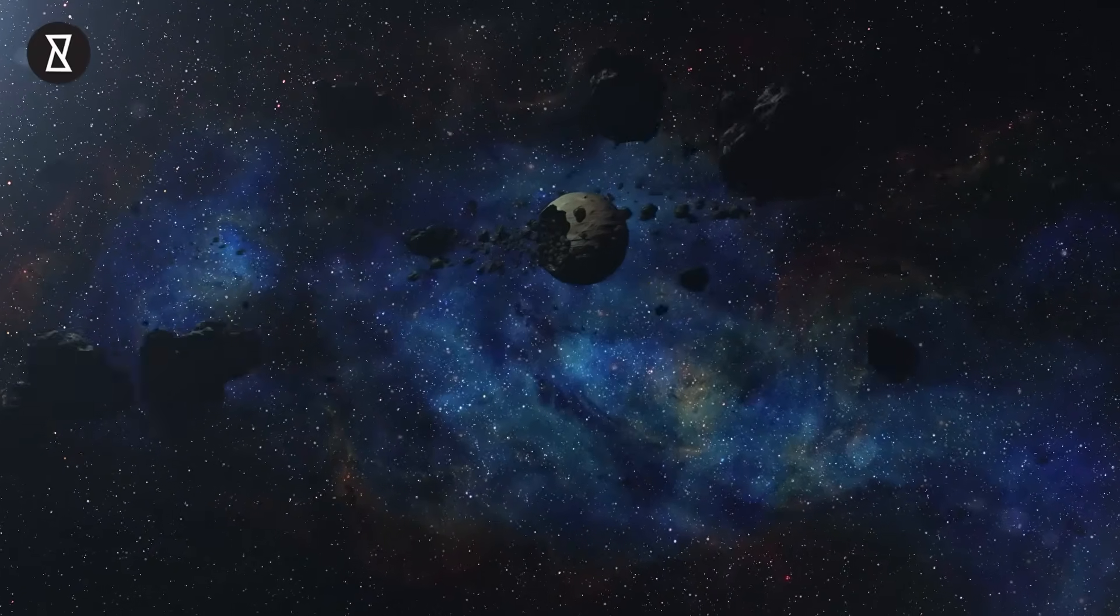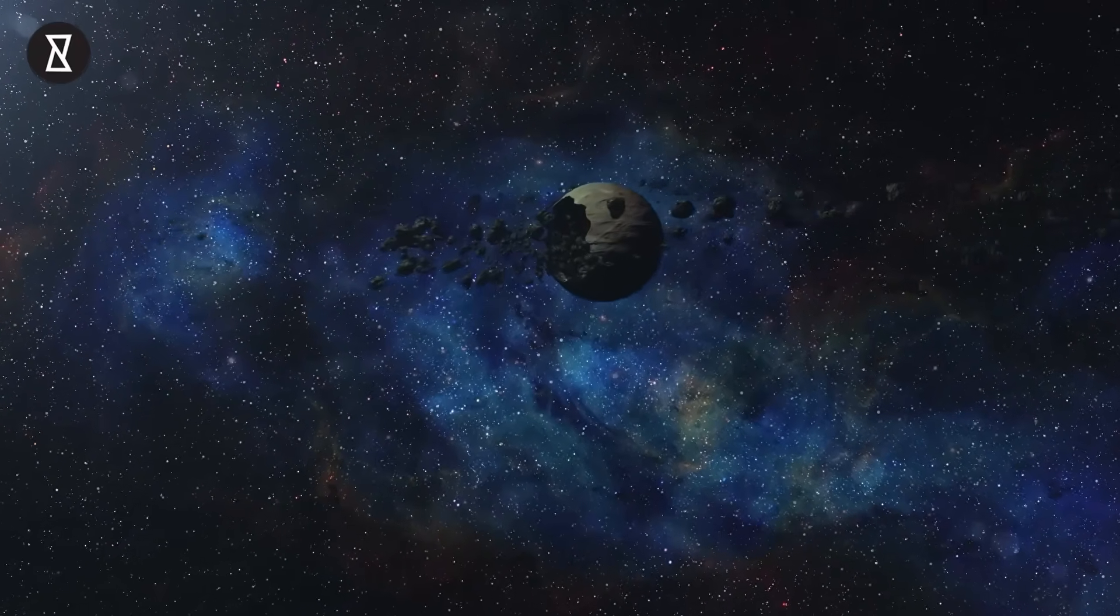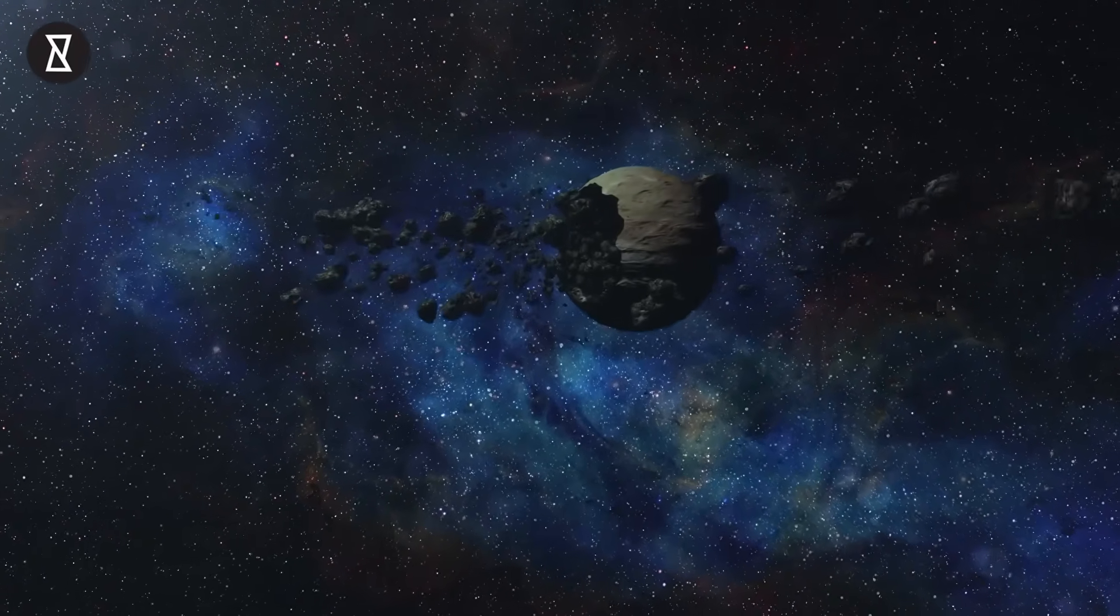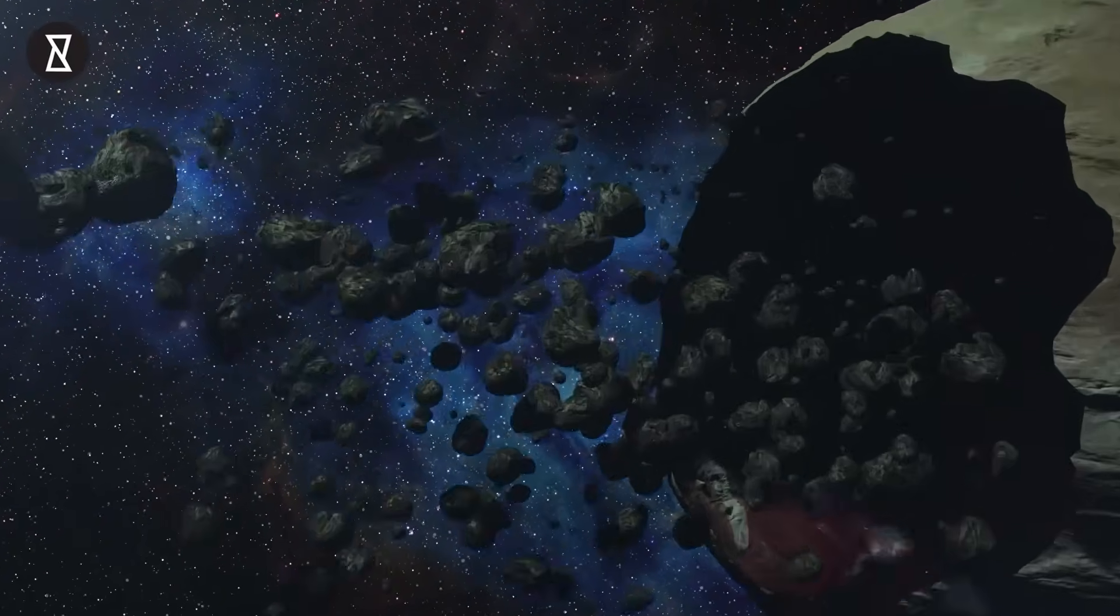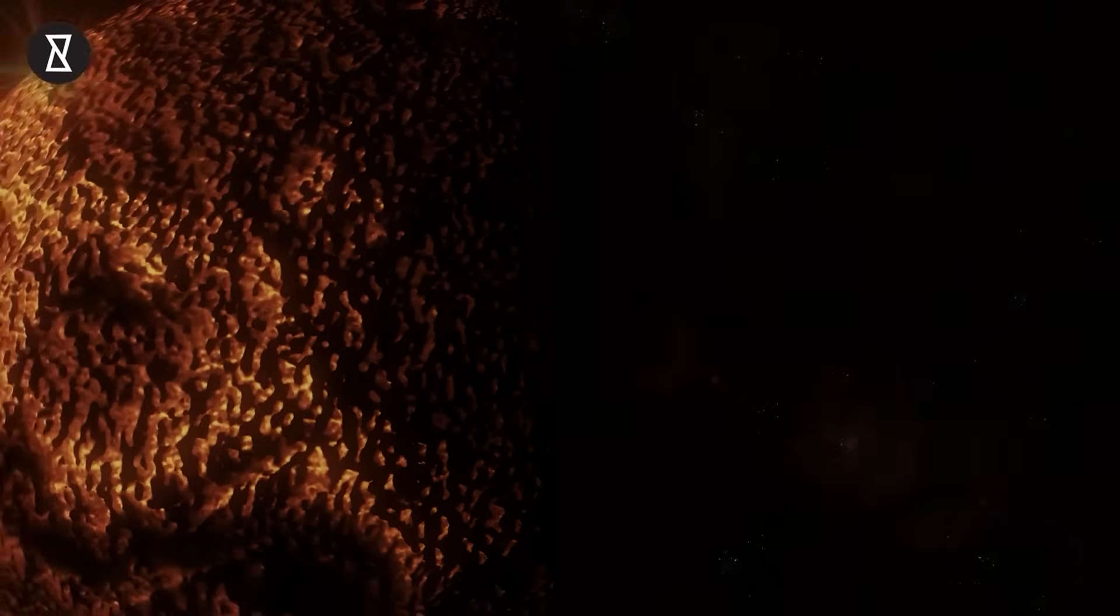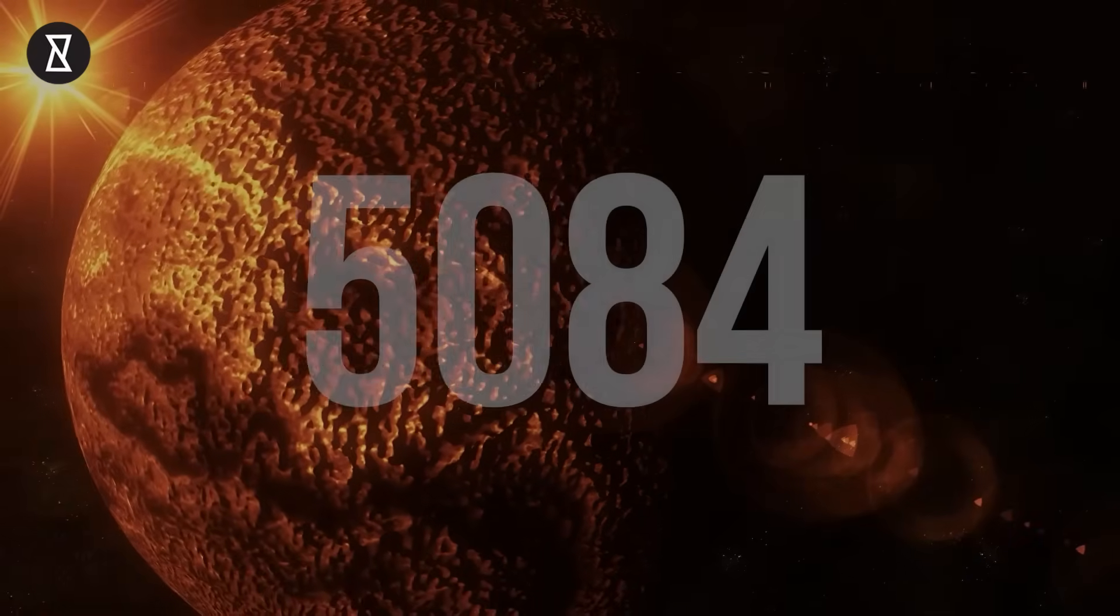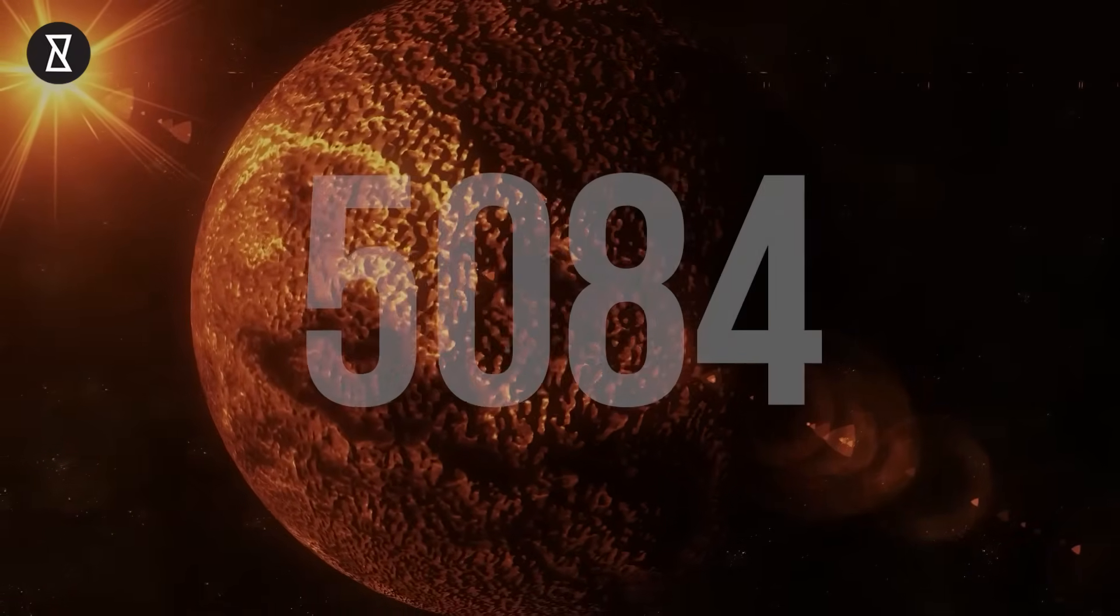Some planets even wander aimlessly in the cosmos without orbiting a star. Those planets are called rogue planets, but we will talk about them some other time. Currently, the number of known exoplanets is 5,084, and the number has been growing steadily.